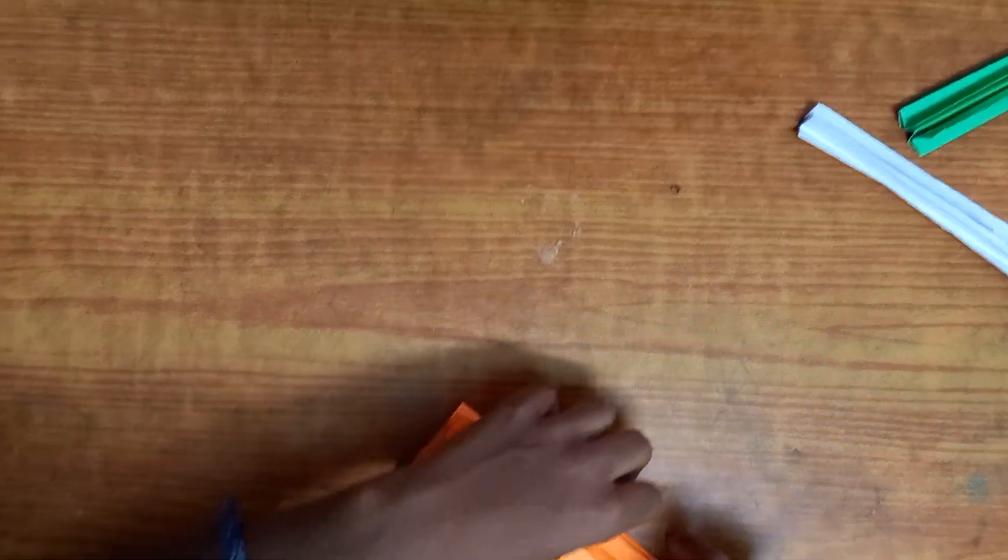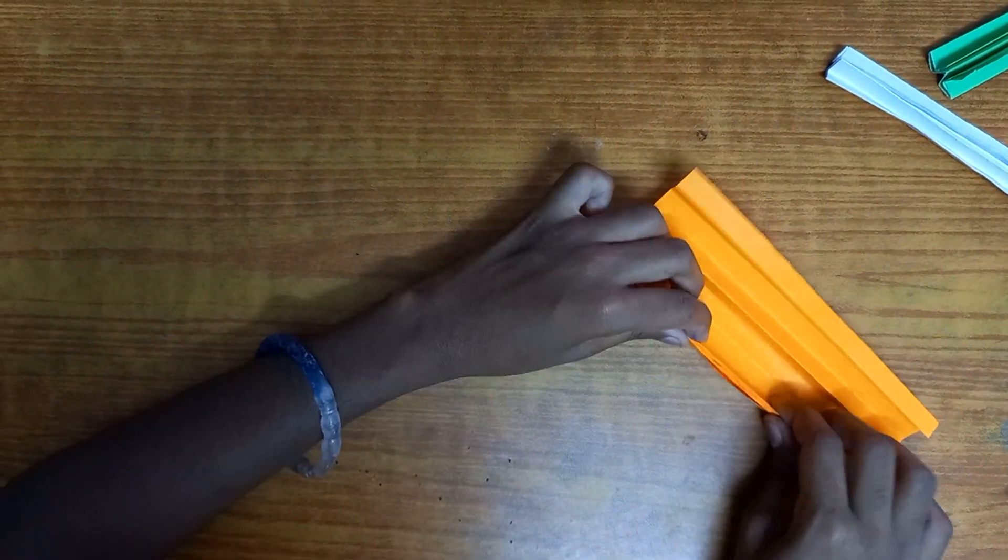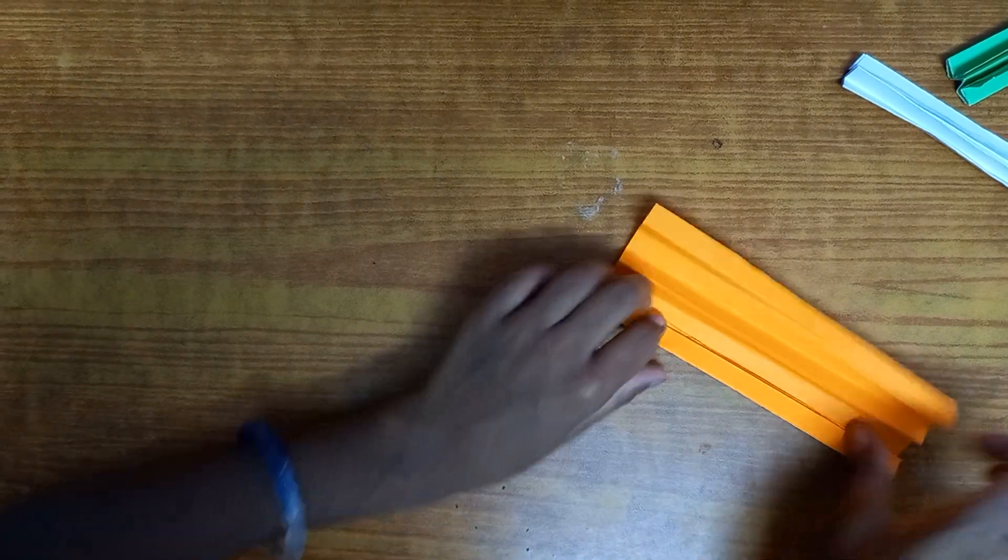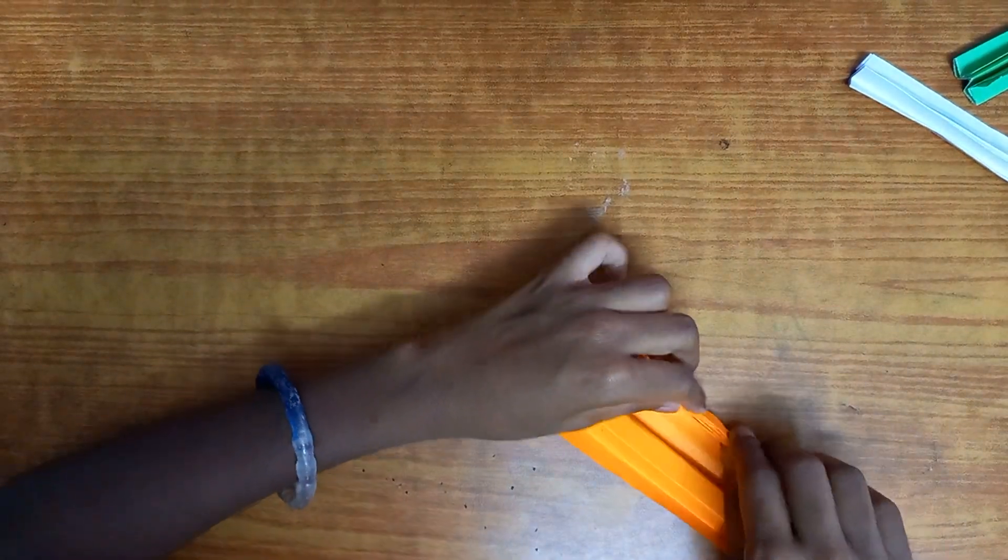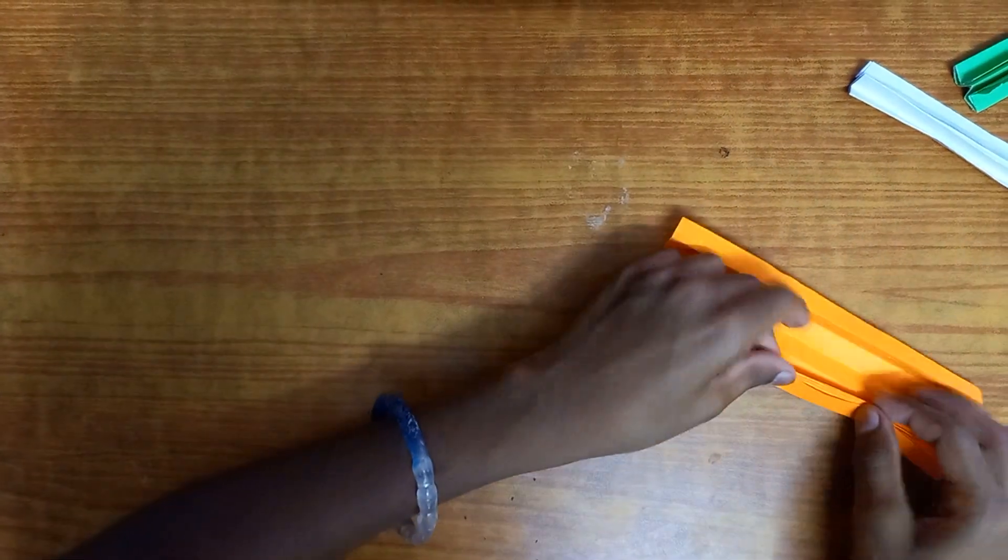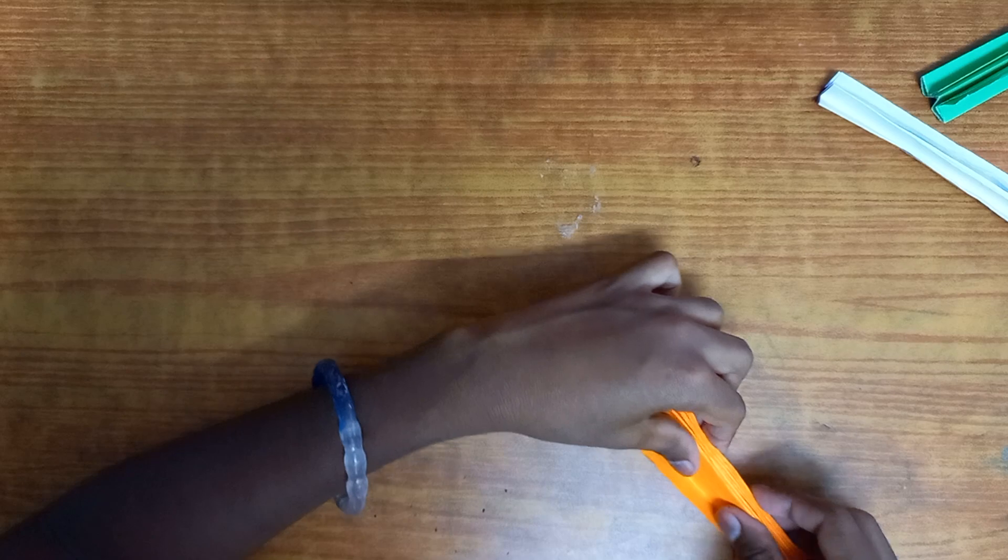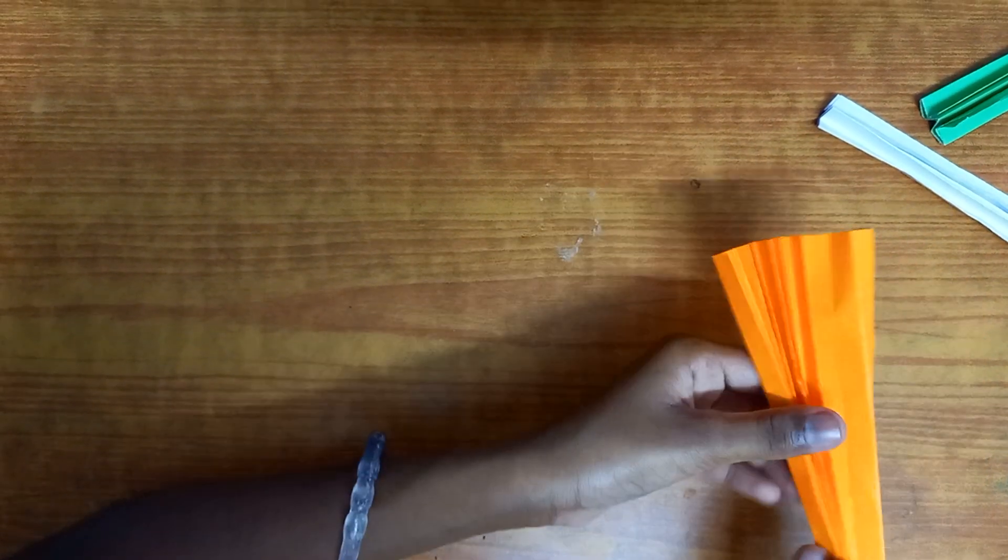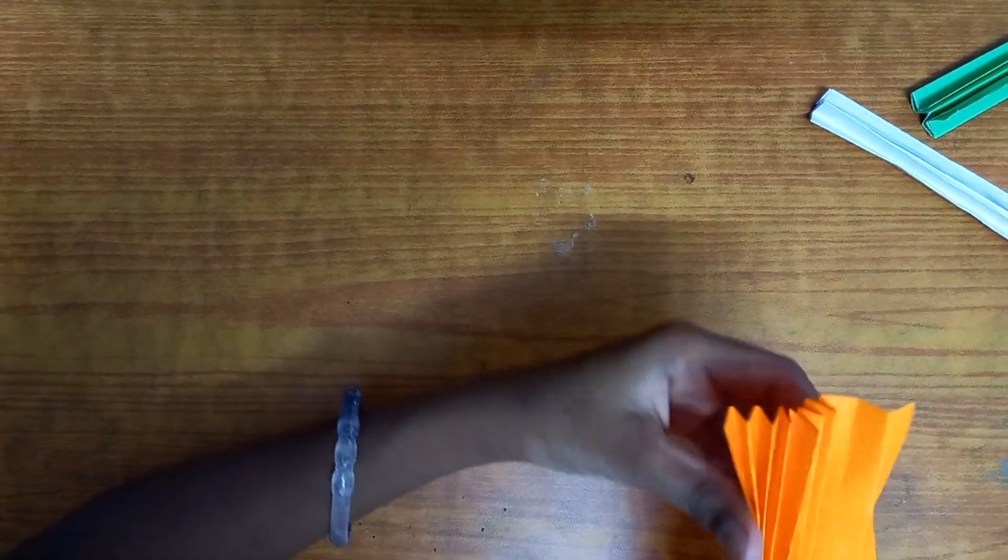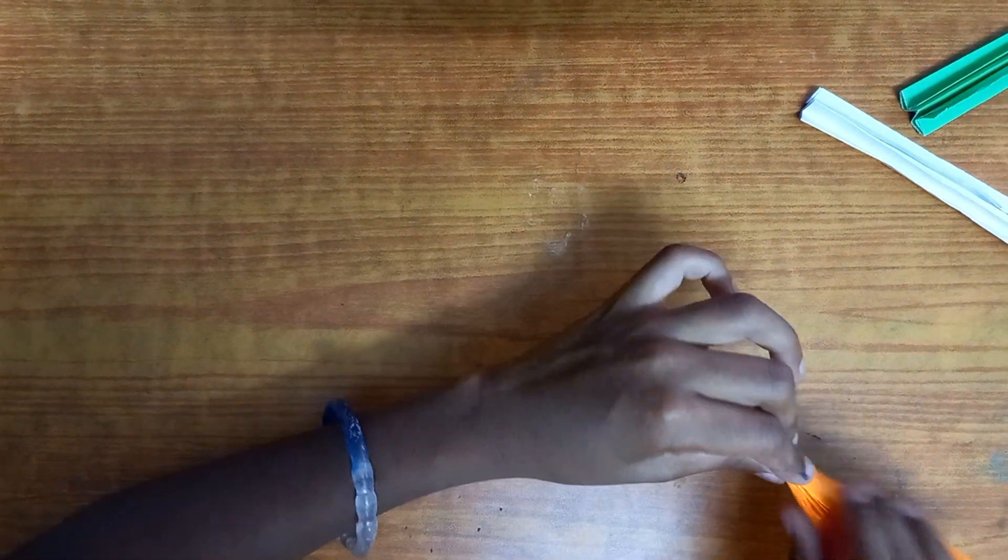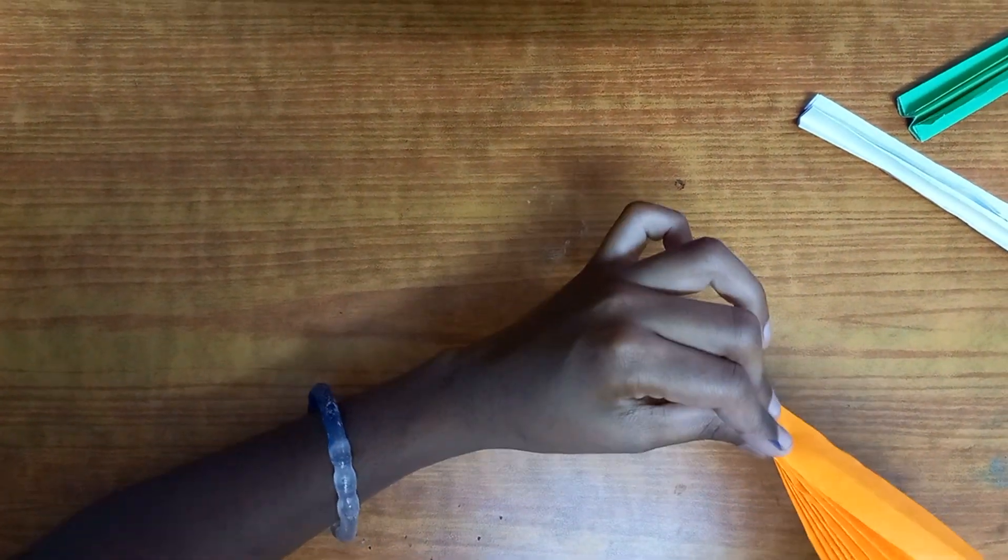So you're just gonna fold this into one hand fan. Make sure you're folding it nice and slow, else the paper is gonna crumble. And even though you're doing it fast, try not to make the paper crumble, or else it's gonna get really messy. It doesn't look nice if your paper is crumbled.